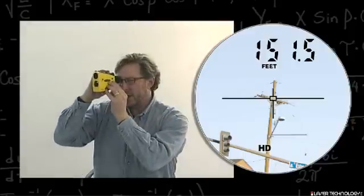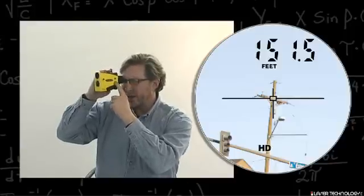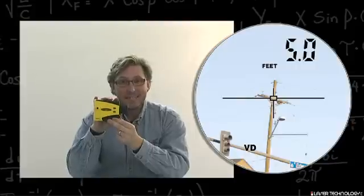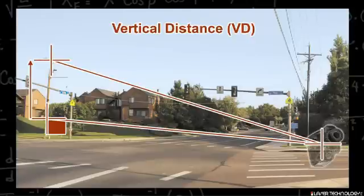Now when you look through the laser, you've already collected the data, so just hit the down arrow one time and that will change to VD at the bottom of the screen, or vertical distance. That is the change in distance from the center of the laser to what we actually targeted.